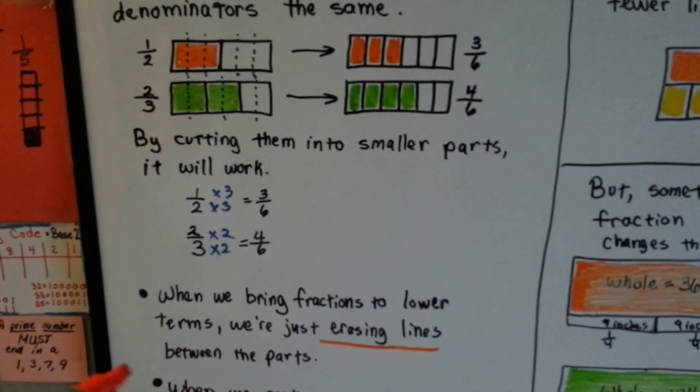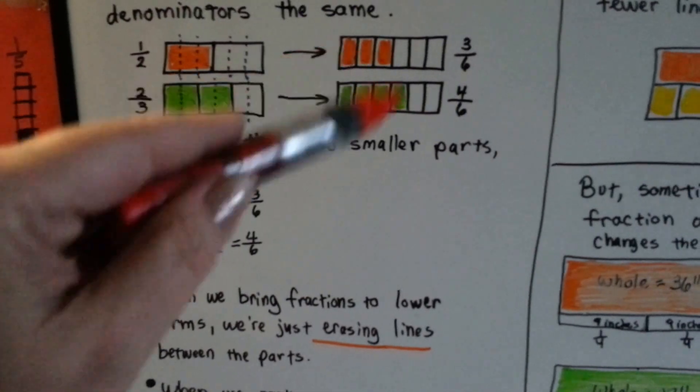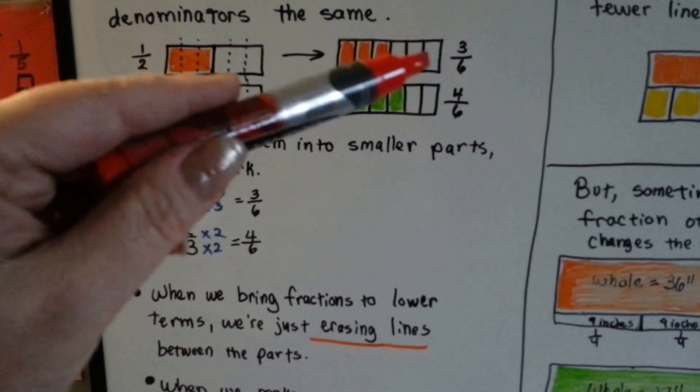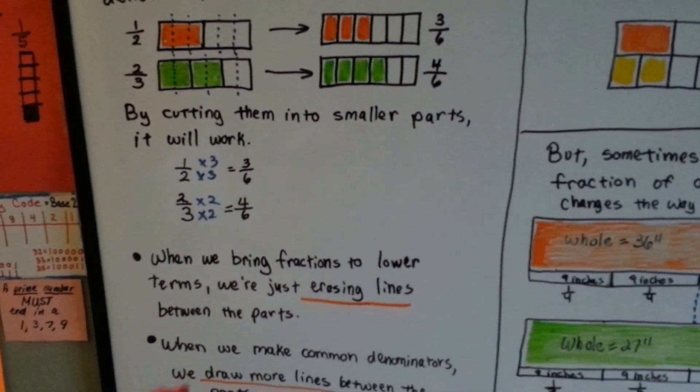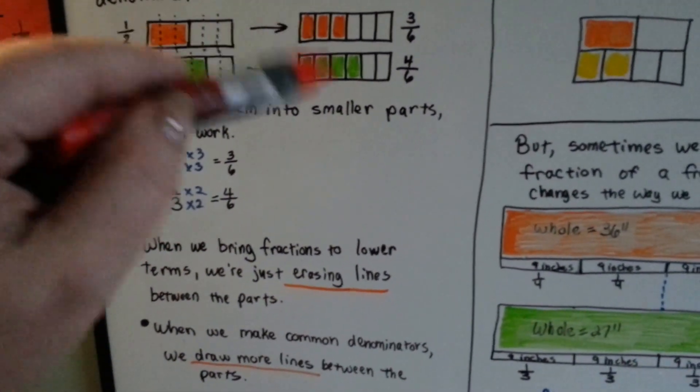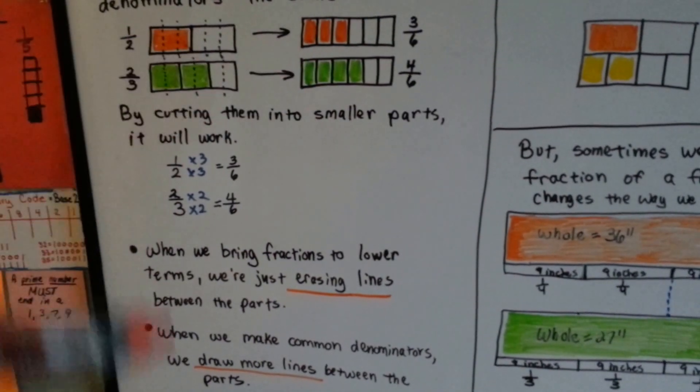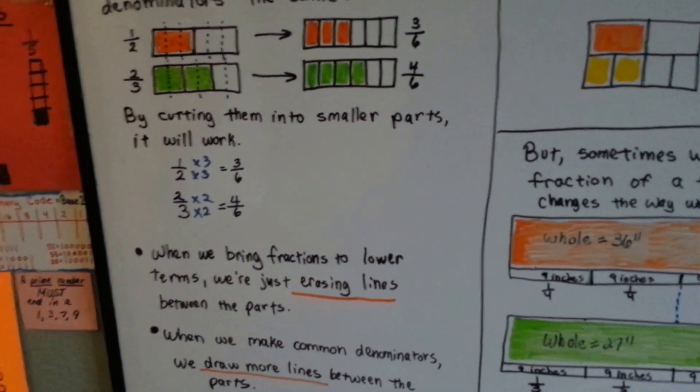Well, when we bring fractions to lower terms, we're just erasing lines between them. When we want to turn three-sixths into a half, we just erase some of the lines. When we make common denominators, we draw more lines in between them to make them have the same number for the denominator, the same number of parts.